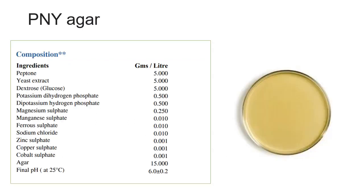Next is PNY agar. The composition includes peptone, yeast extract, dextrose, potassium dihydrogen phosphate or dipotassium hydrogen phosphate, magnesium sulfate, manganese sulfate, ferrous sulfate, sodium chloride, zinc sulfate, copper sulfate, and cobalt sulfate. The pH of this media is 6.0 plus or minus 0.2.